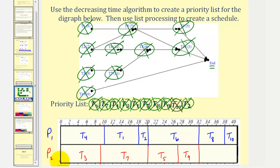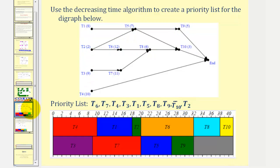Notice how processor two remained idle for the last nine hours, from thirty-two hours to forty-one hours. Here's the same schedule shown in color if it makes it easier to read. Again, the idle time is on processor two, while processor one runs to completion.